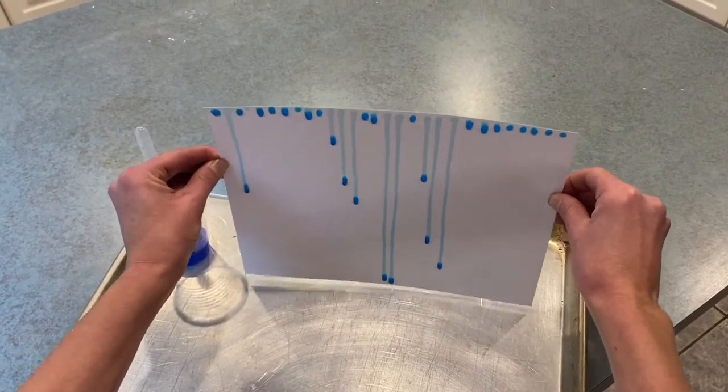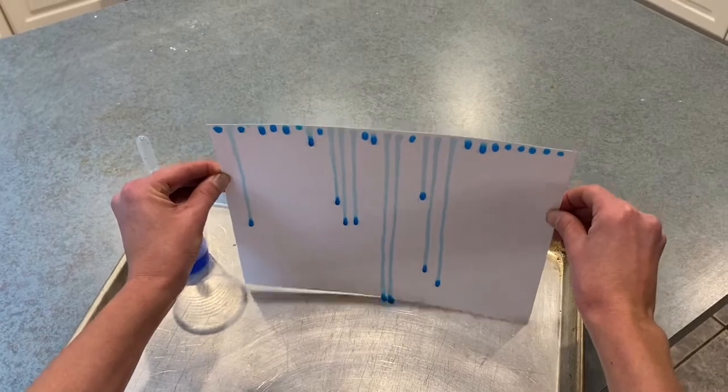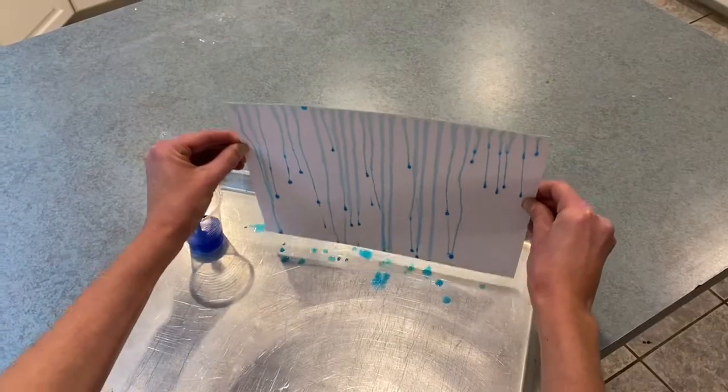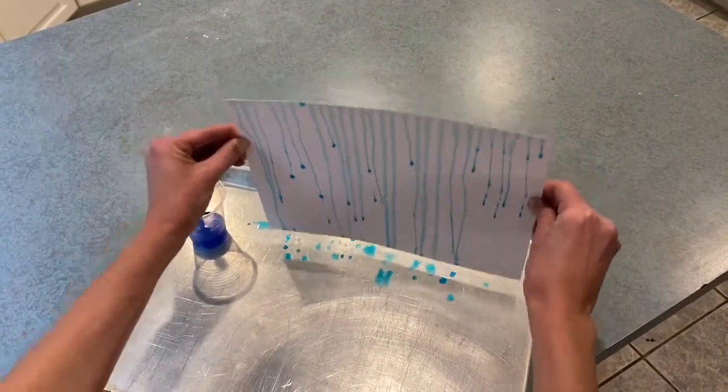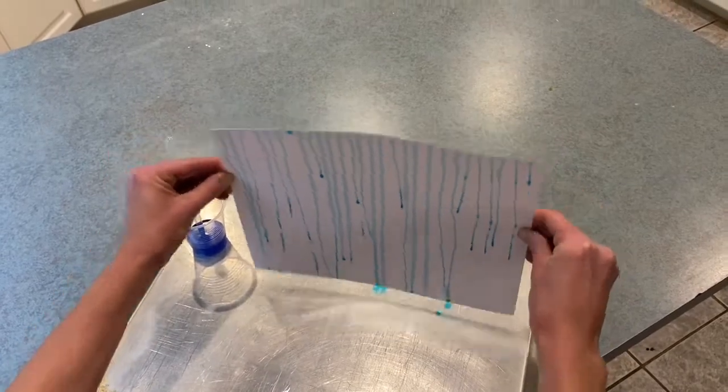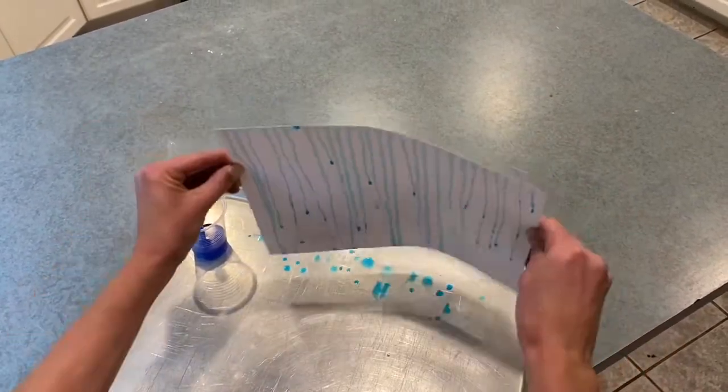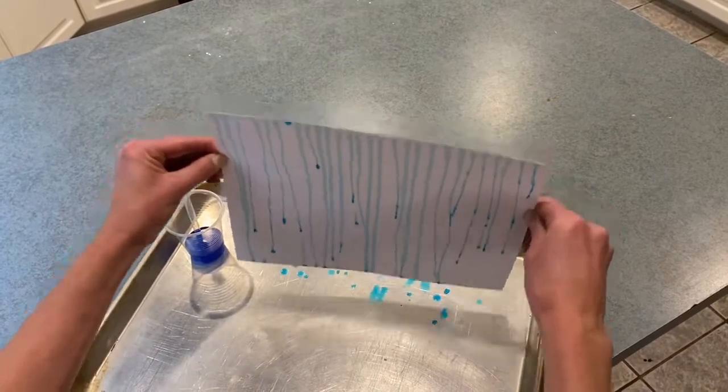And if they don't rain down to the bottom, that's okay. They'll eventually do it. All right. So now all my drops are pretty much making their way down. You might have to give it a little shake, a little tap on the back. That gets all the water to go down into the cookie sheet.